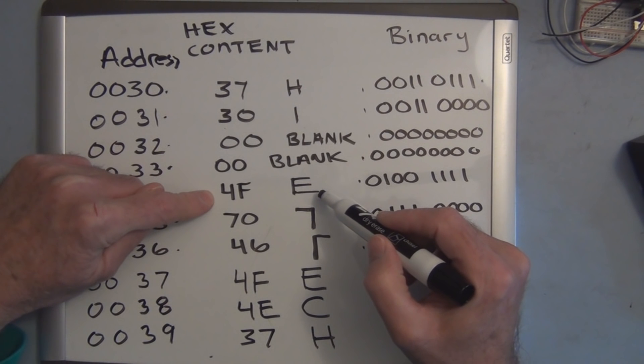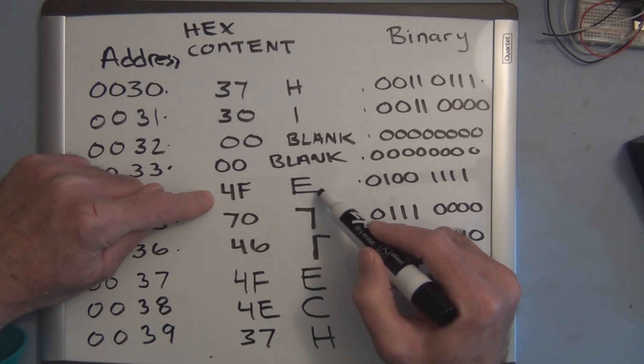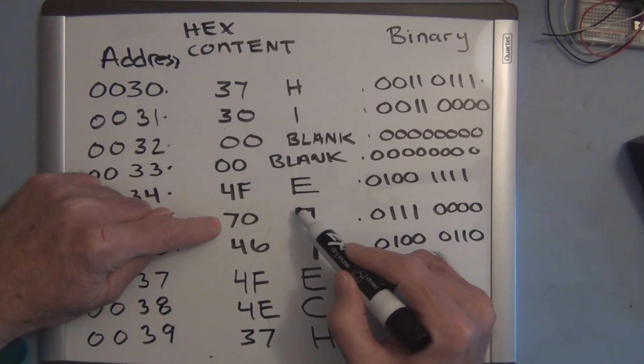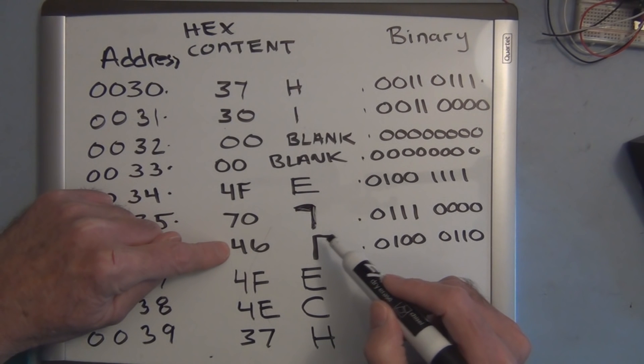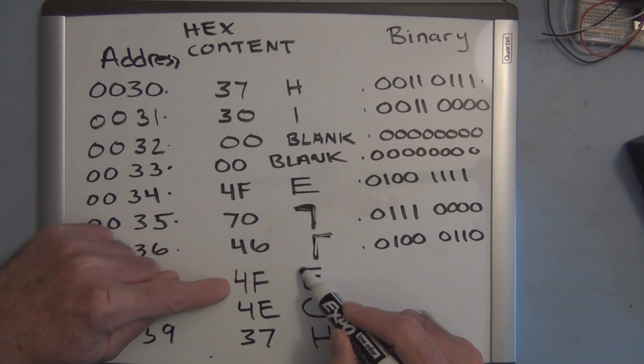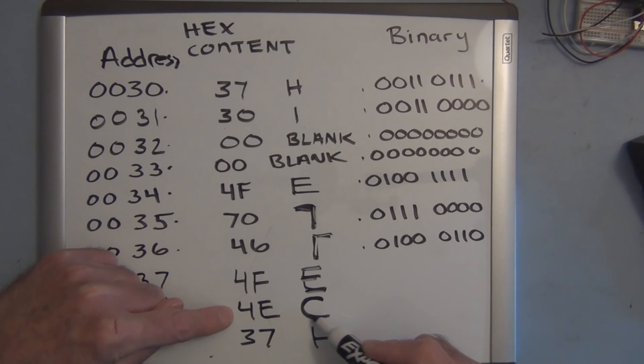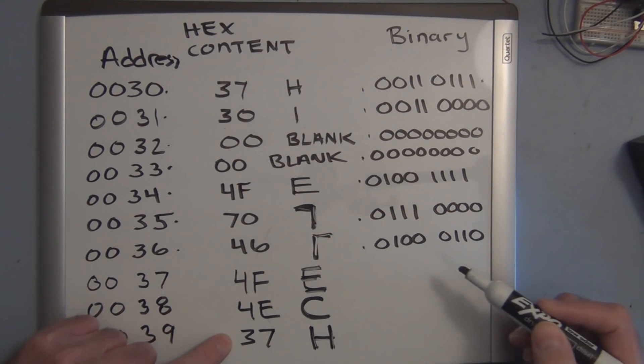4F for the letter E, 70 creates this half of the letter T, 46 created this half here, and then again with 4F for the letter C and 37 for the letter H.